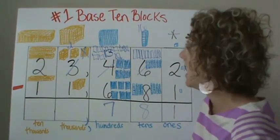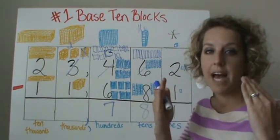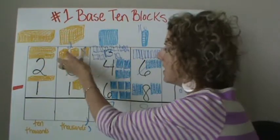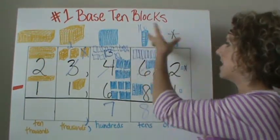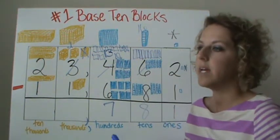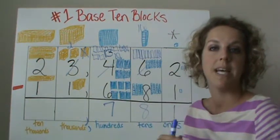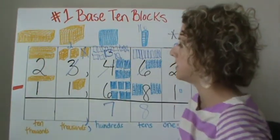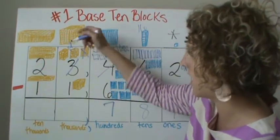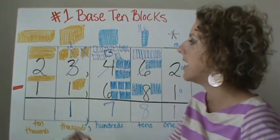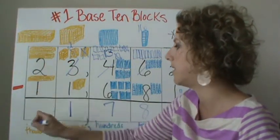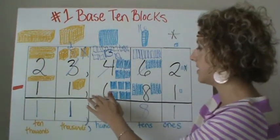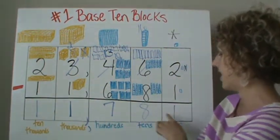Manipulatives help you to visualize this. Anyone can go ahead and subtract, but if you don't quite understand what's going on with regrouping — taking this, splitting it into ten, taking this one, splitting it into ten — your mind isn't going to grasp it as much as if you can actually visualize it. It's not for everyone, but this method might help you. We have two minus one is one, and two ten thousands minus one ten thousand is one. So 23,462 minus 11,681 is equal to 11,781.